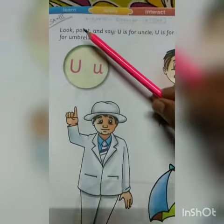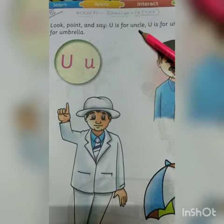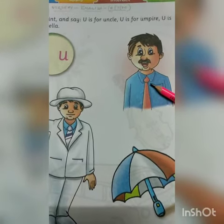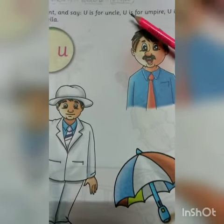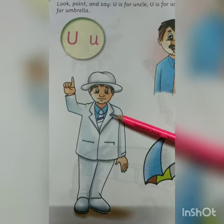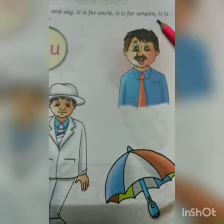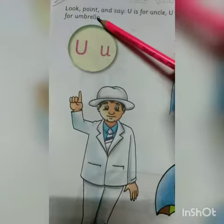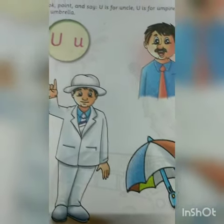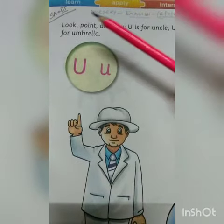Look, point and say: U is for uncle — here is a picture of uncle. U is for umpire — here is a picture of umpire in cricket, this is the umpire. U is for umbrella — here is a picture of umbrella.